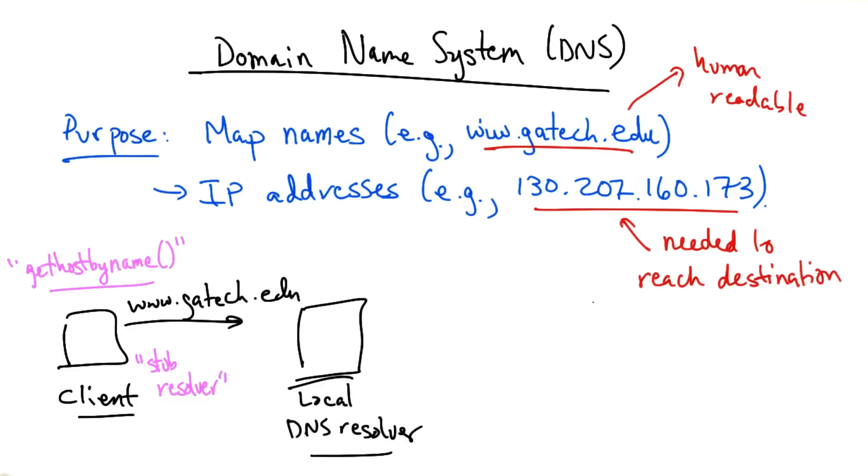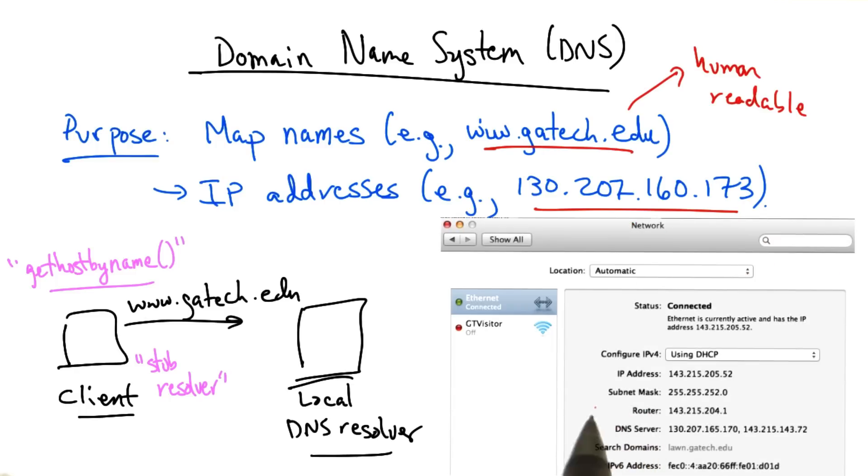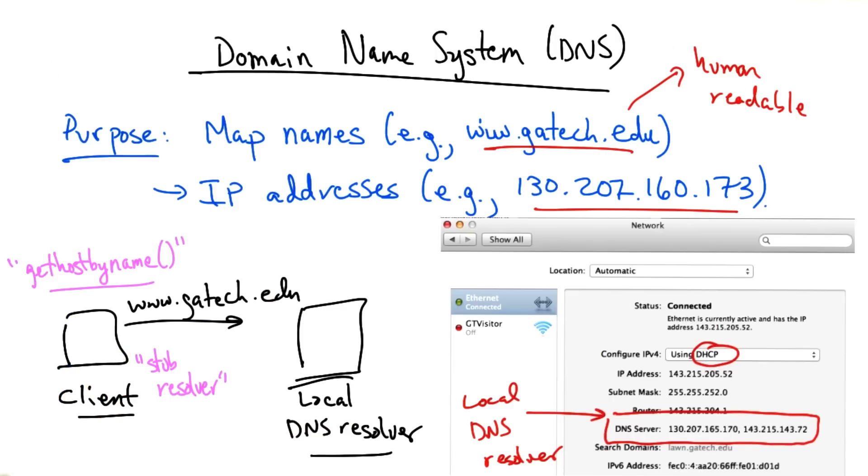But if not, the query is sent to what's called a local DNS resolver. Your local DNS resolver is typically configured automatically when your host is assigned an IP address using a protocol called the domain host configuration protocol, or DHCP. In your host configuration, such as this one, you can see that this local host has two local DNS resolvers. Typically, a client will try the first DNS resolver, and if it doesn't receive a response within a pre-configured timeout, it will try sending the same query to the second local DNS resolver as a backup.